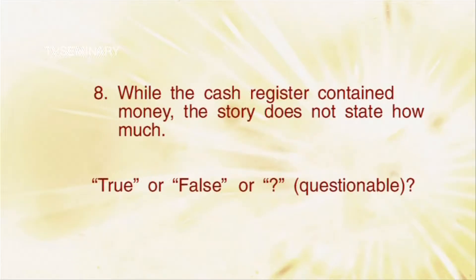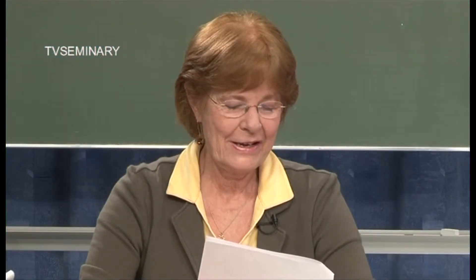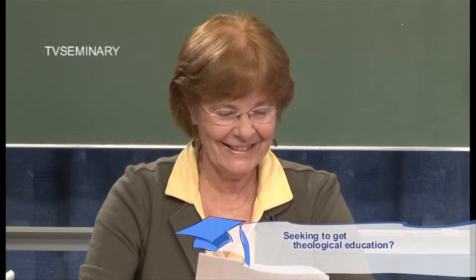Number eight: while a cash register contained money, the story does not state how much — true, false, or question? It's a question mark, because it may not have had money in it at all. The story doesn't exactly say there was money in the cash register. It could have been peanuts or checks.